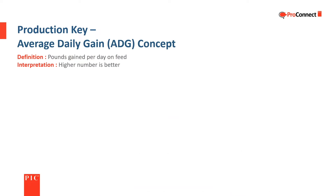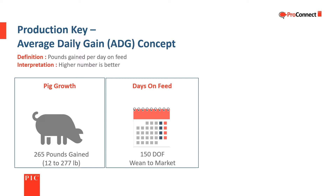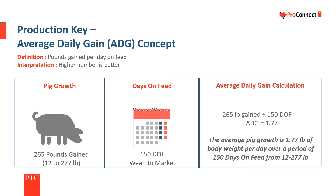Average daily gain refers to the pig's growth rate and is our second key indicator. It represents the pounds gained for each day on feed — in other words, for each day the pig is in the barn eating feed. A higher number is better. In our example, the pig gains 265 pounds in 150 days on feed. To calculate his average daily gain, we divide the 265 pounds gained by the 150 days on feed, which gives us an average daily gain of 1.77 pounds.